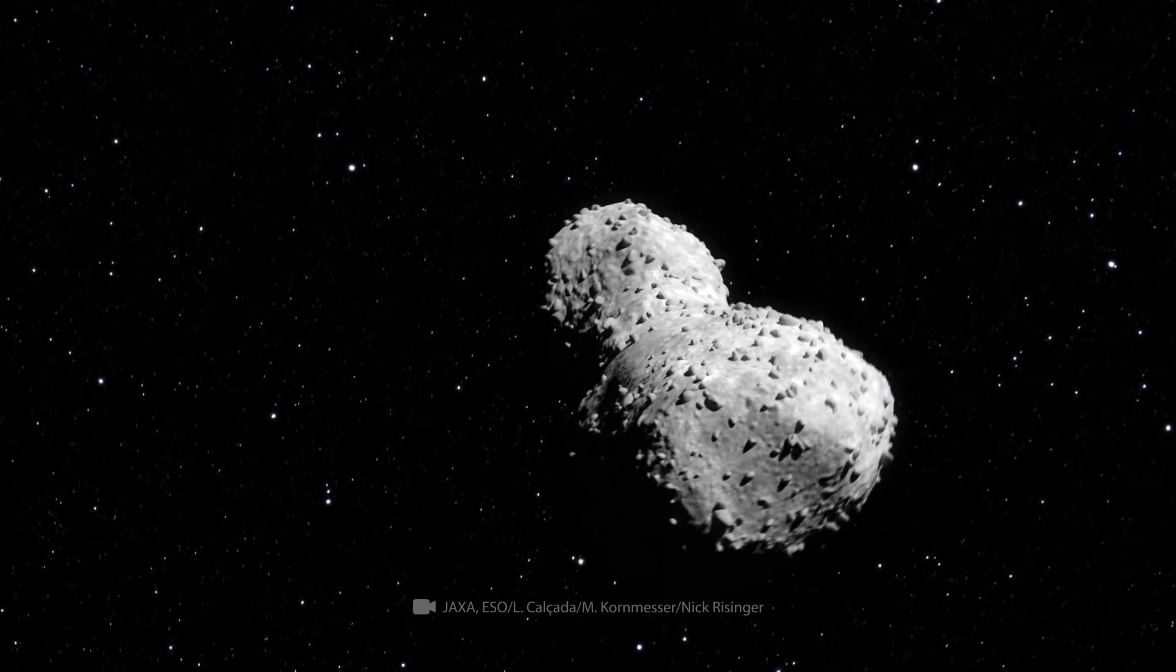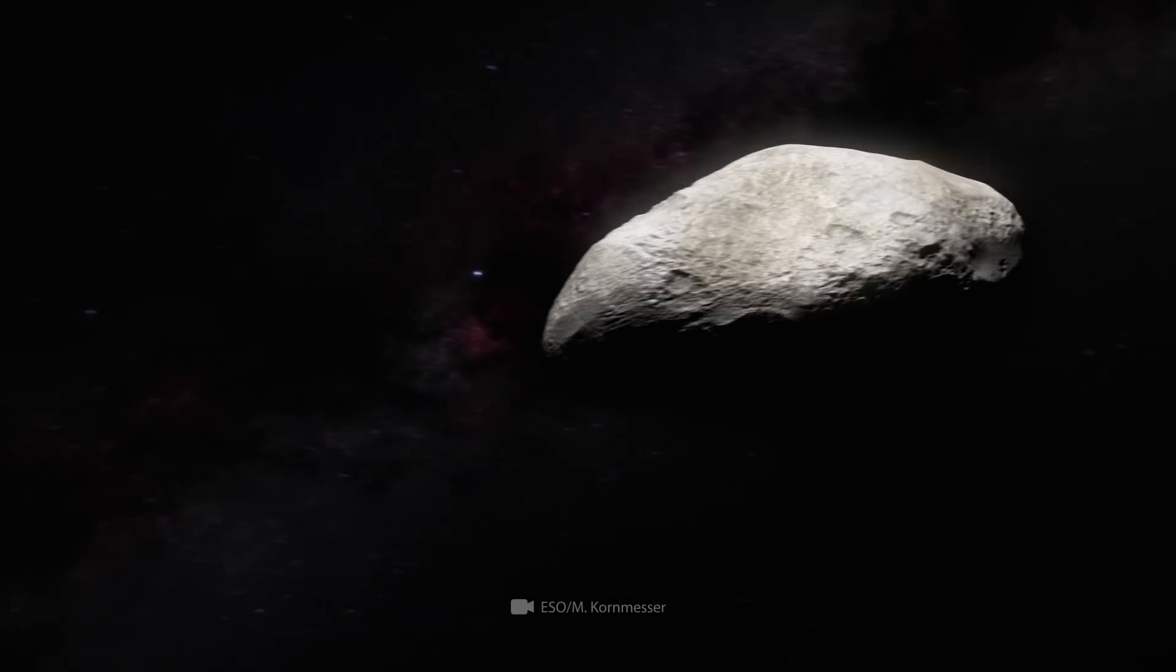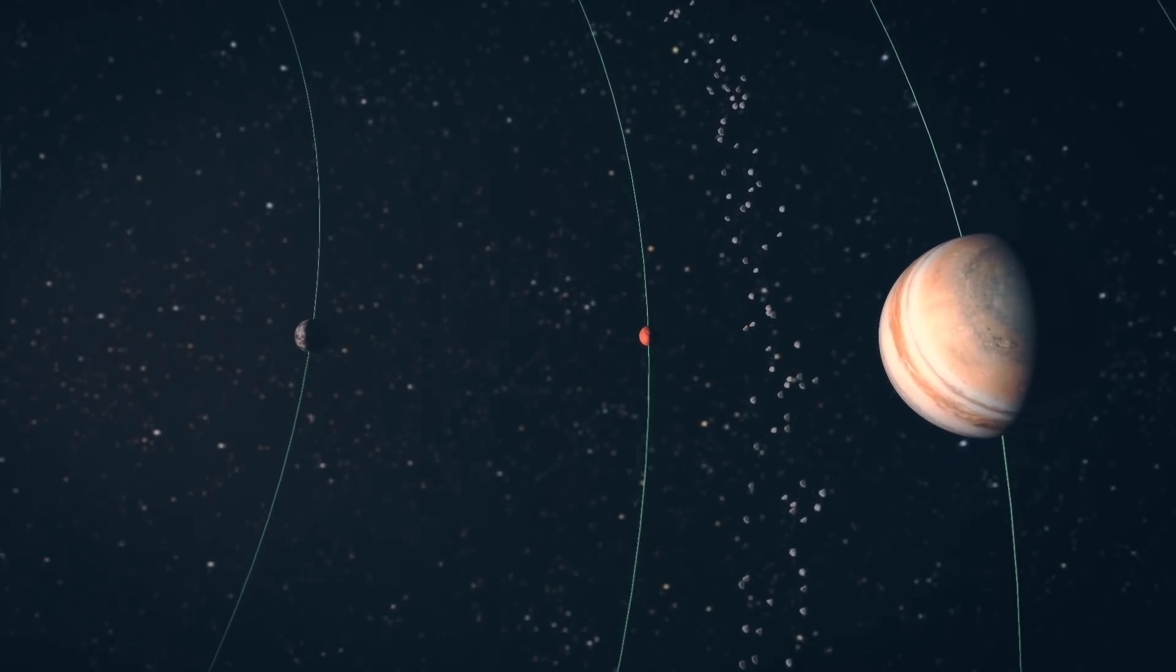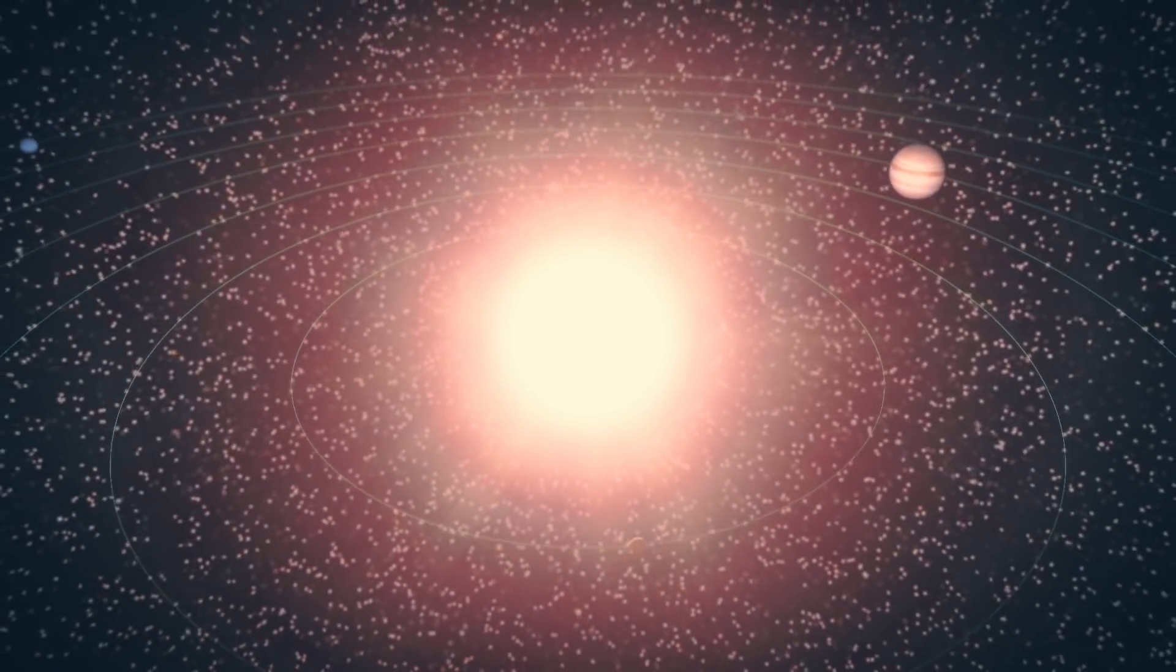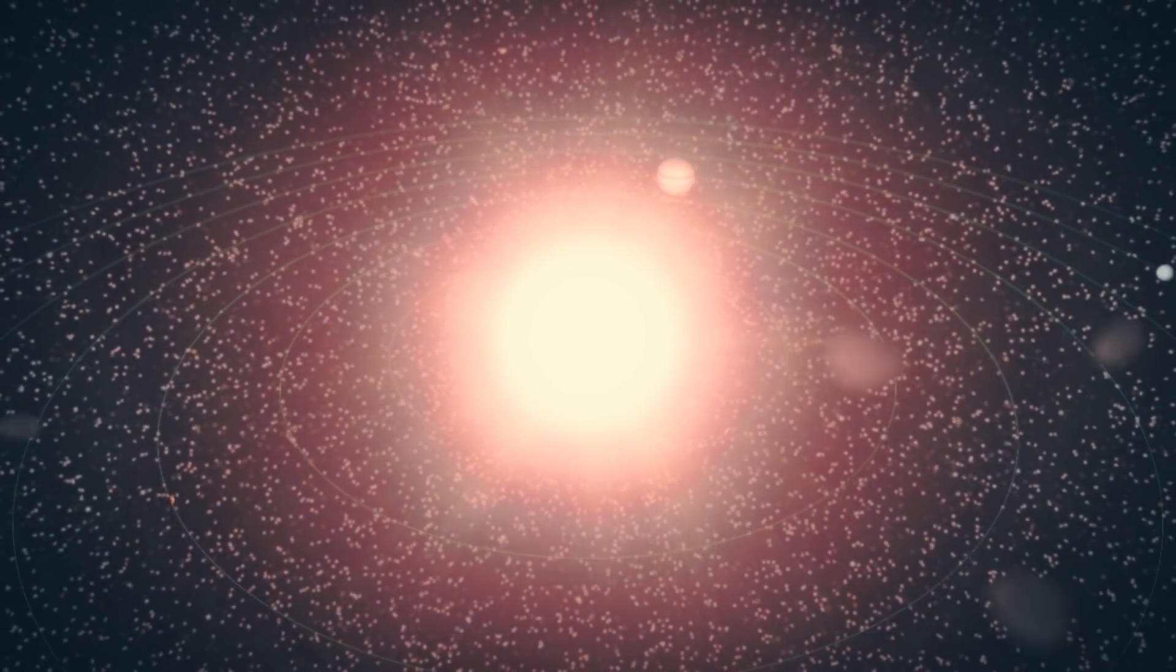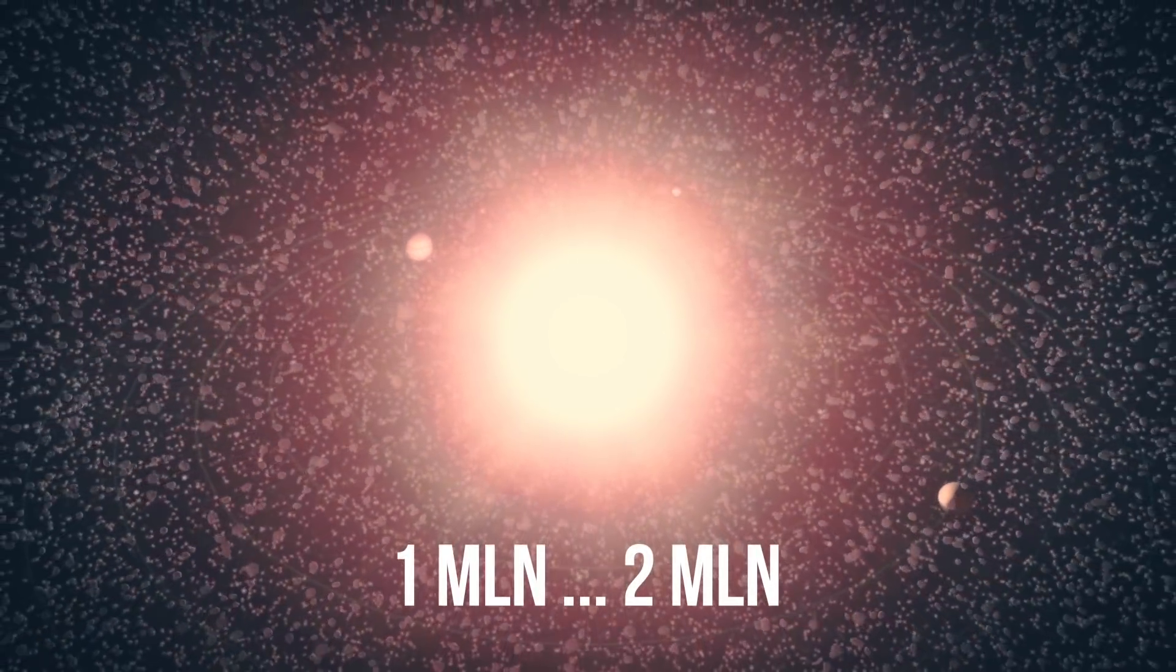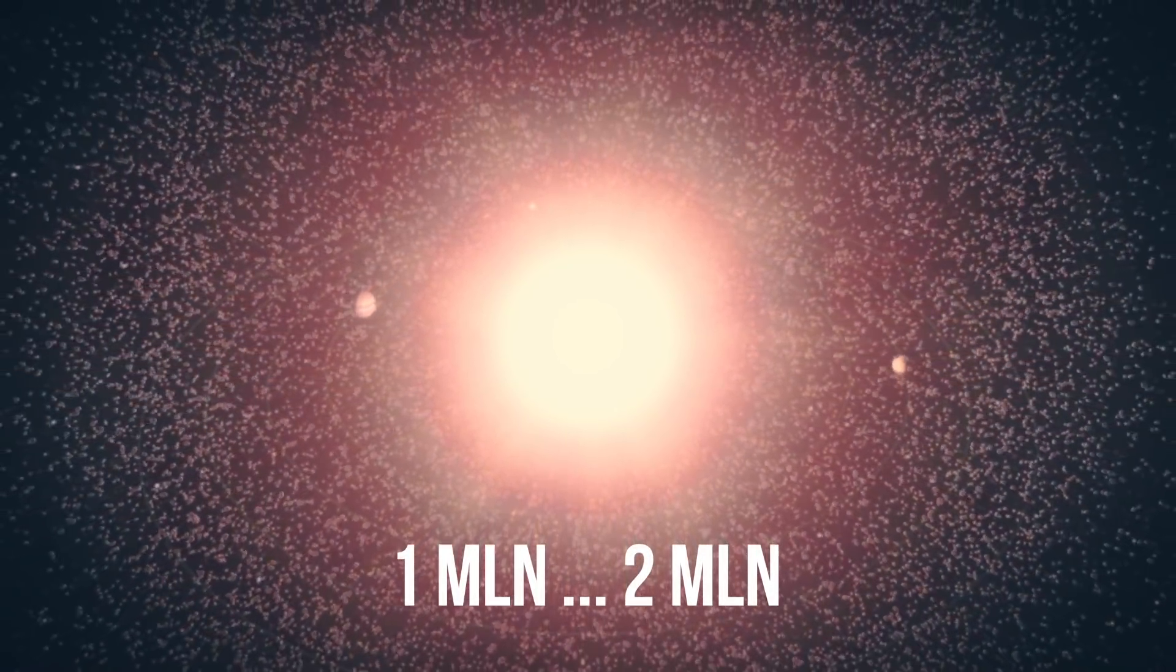At the moment, hundreds of thousands of asteroids have been discovered in the solar system. The orbits of half of them are quite well studied. The rest are still flying somewhere in the unknown. But in fact, scientists suggest that we are adjacent to 1 to 2 million objects with a diameter of more than half a mile.